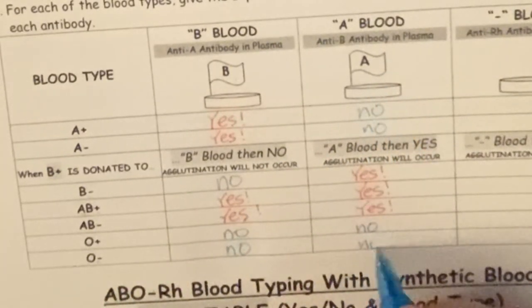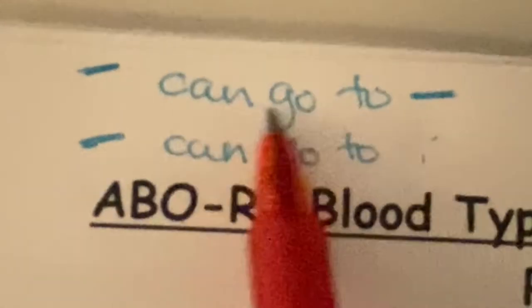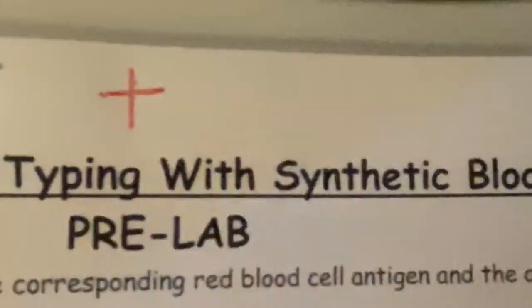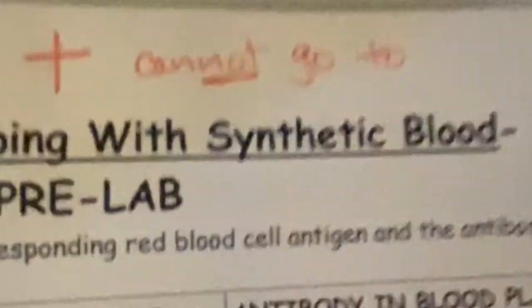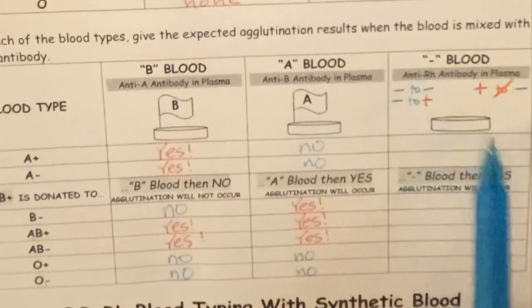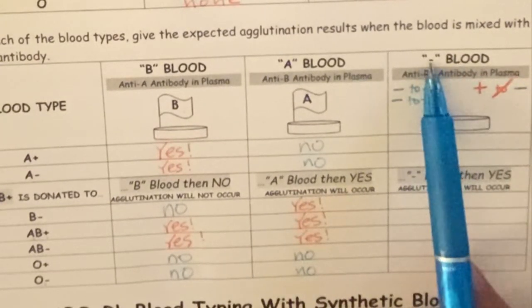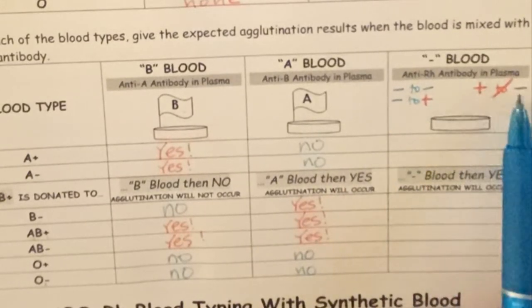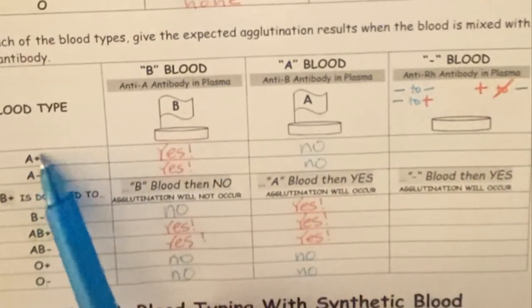You'll notice for none of these did we talk about positive and negative. Negative can go to negative, negative can go to positive, but positives cannot go to negatives. If you're looking at negative blood, the blood cell doesn't have anything on it, and the anti-RH antibody is floating around in the plasma.